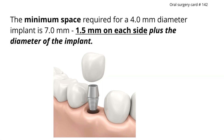Oral surgery card number 142: the minimum space required for a four millimeter diameter implant is seven millimeters — 1.5 millimeters on each side plus the diameter of the implant. The important number to remember is 1.5 millimeters on each side.